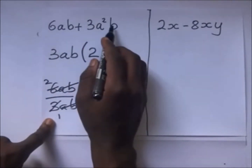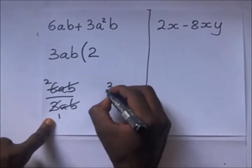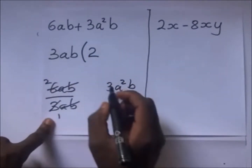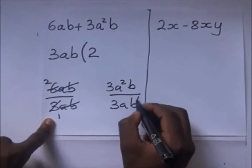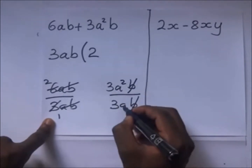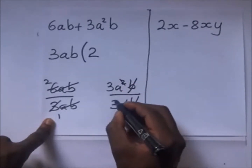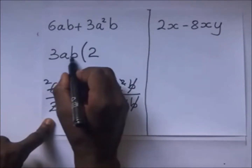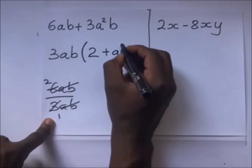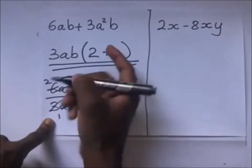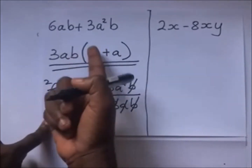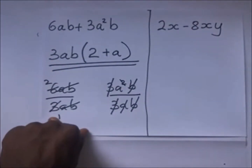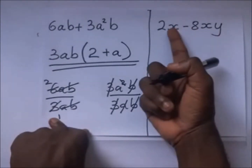Then 3a²b divided by 3ab: the 3s cancel, one a cancels with the other a leaving one a, and b cancels. So you remain with a. The result is 3ab(2 + a), and we have factorized that expression.